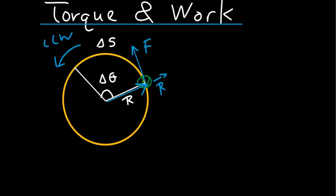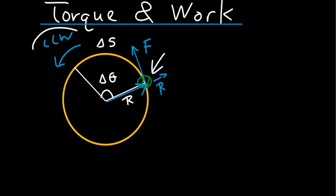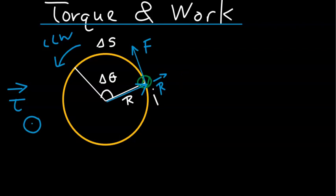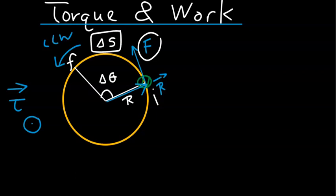Let us look at the following rotating system. A system consists of a point mass spinning in a counter-clockwise direction. This mass is being acted upon by a tangential force F at a point with the position vector R, situated at a distance R from the axis of rotation. Such a force F and position vector R creates a torque that will rotate the system in the counter-clockwise direction as shown. As the object moves from point I to point F under the influence of force F, and undergoes a displacement of delta S, we know there is work done by this force, according to the familiar formula F·ΔS.